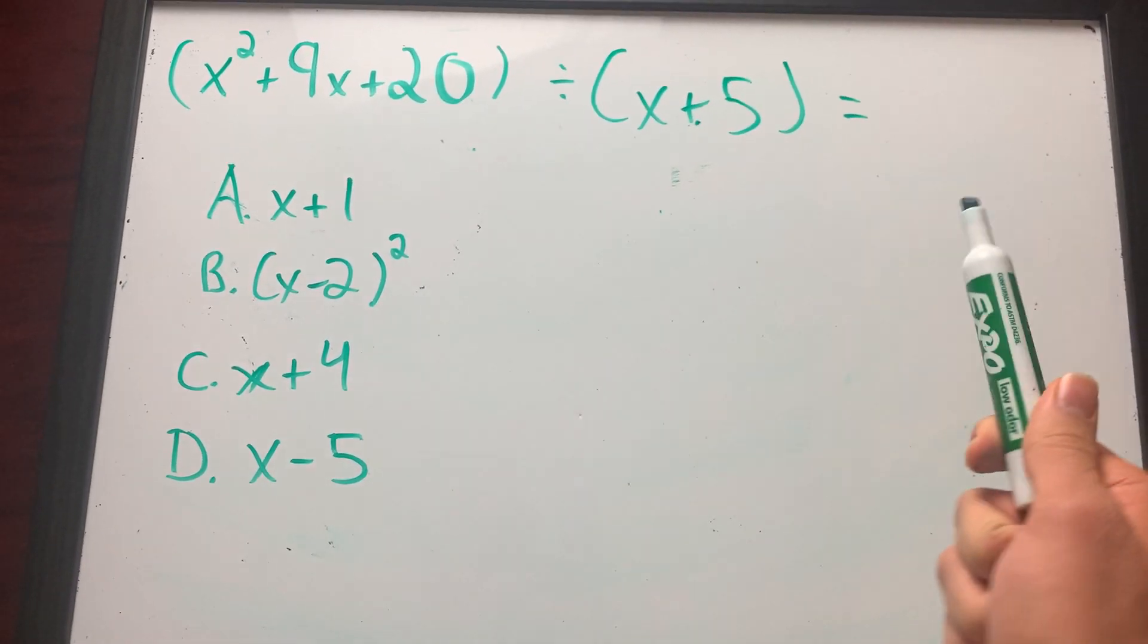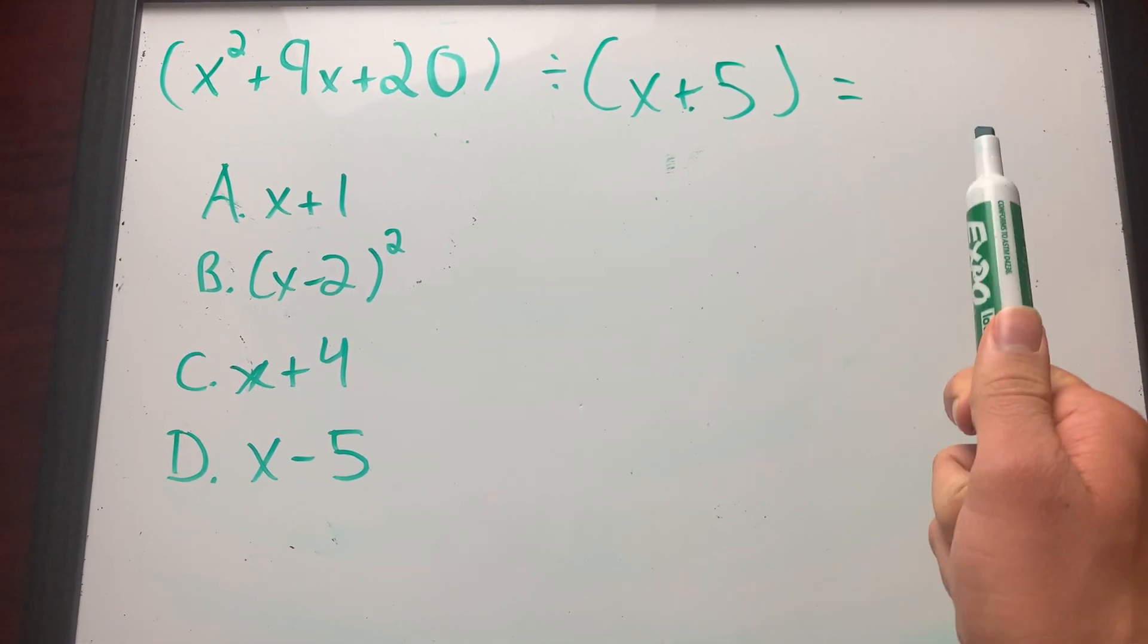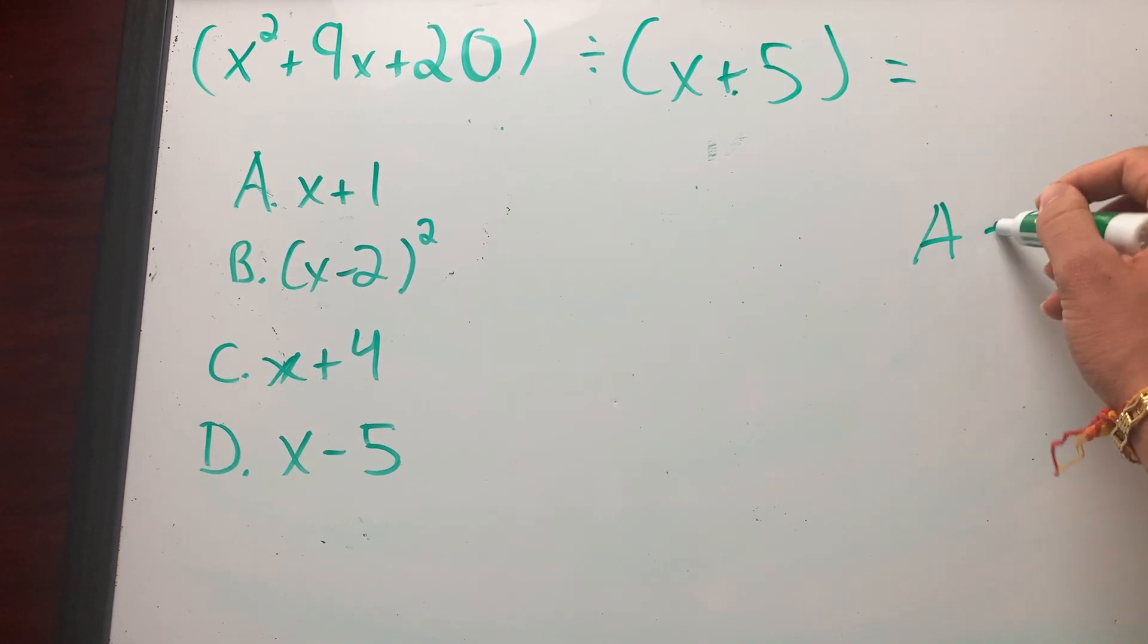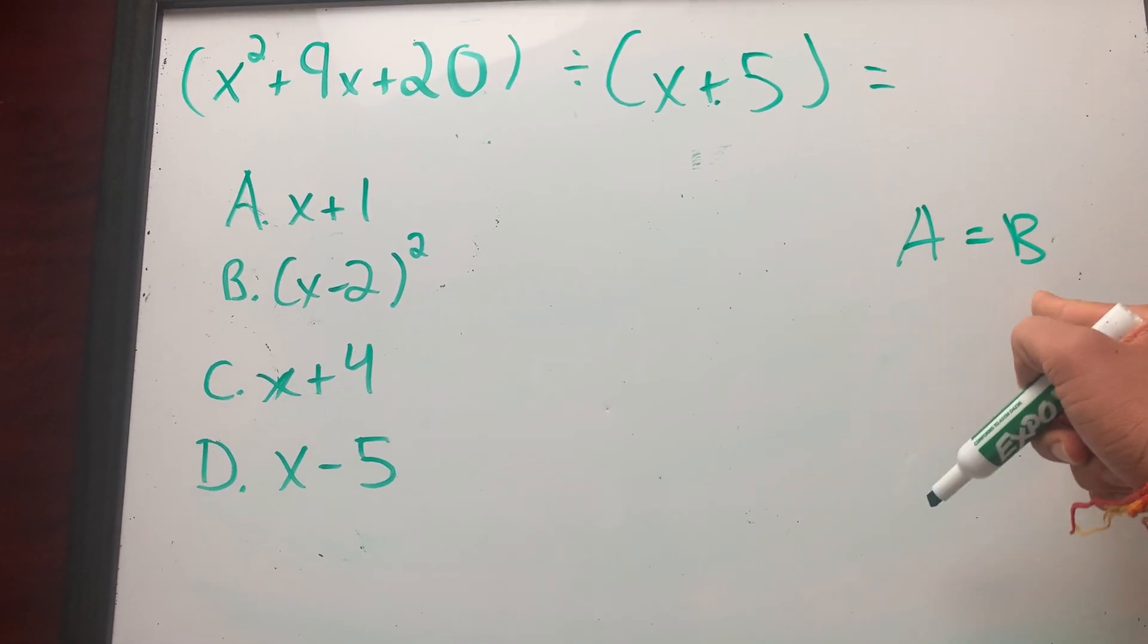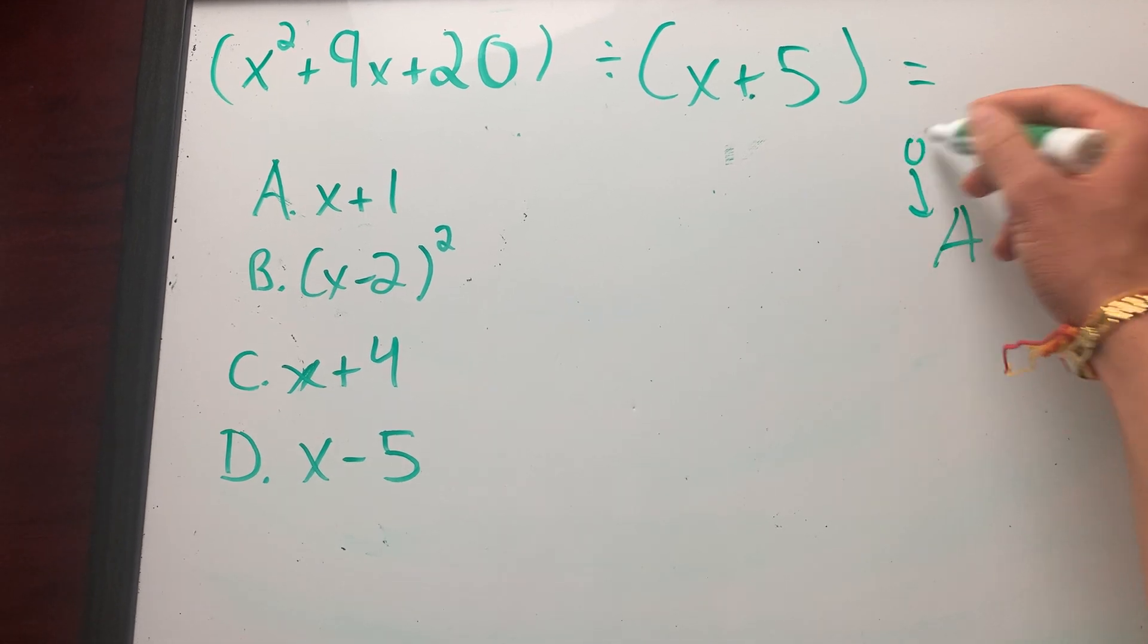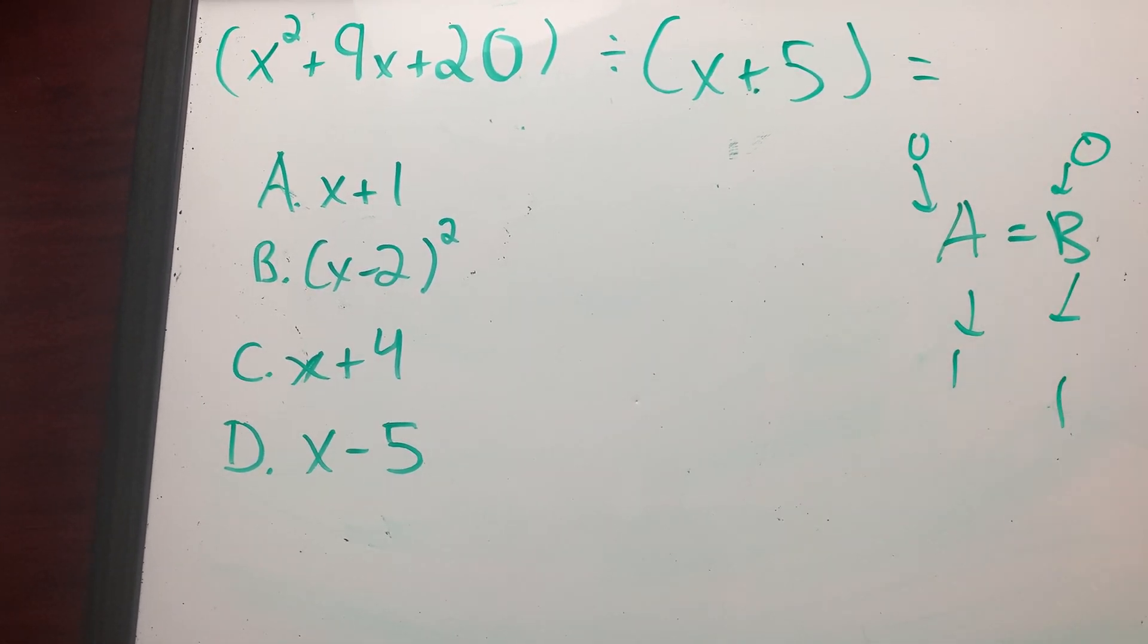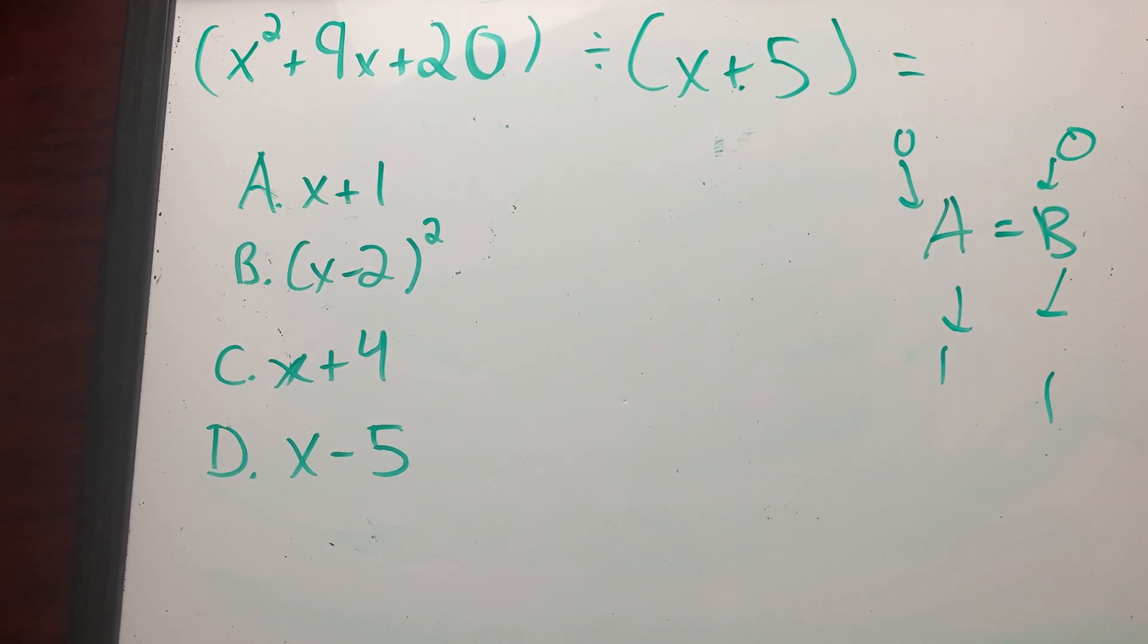So equivalent expression means no matter what the x value is, the resulting value will be the same, right? So if two expressions are equivalent, say A is equal to B, expression A is equal to expression B. If I put in zero into here and zero into here, if I get one out, I should get one out over here as well. Because that's what equivalent expressions are.